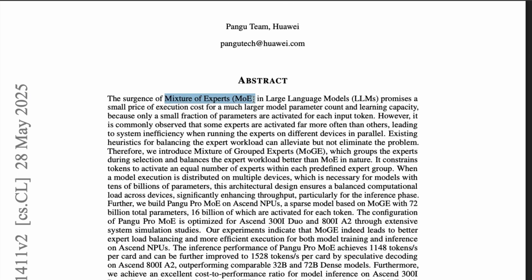The whole idea of MoE — Mixture of Experts — is that you don't need a lot of parameters active all the time. Instead of having a dense transformer model, you have a mixture of experts where only a certain number of parameters are active among the total, and those active parameters are activated for each input token. This allows parallel execution with load balancing benefits you wouldn't get from a dense transformer.